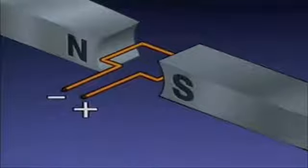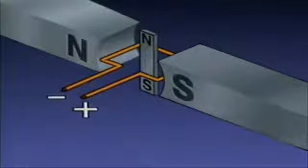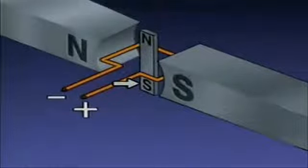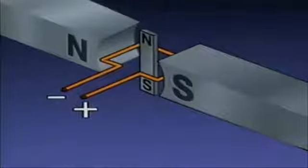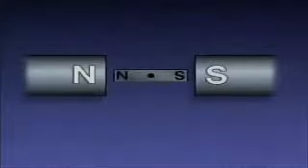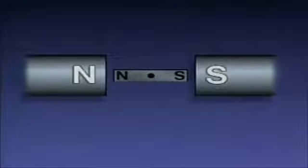The current flow produces magnetic lines of flux that are perpendicular to the loop. As a result of the magnetic field around the loop, magnetic poles are created. The poles are perpendicular to the loop. The north pole is here, and the south pole is here.